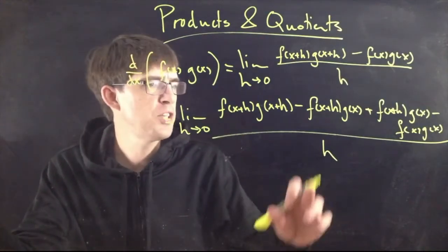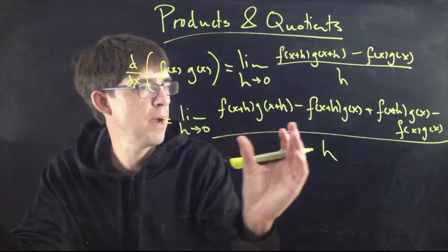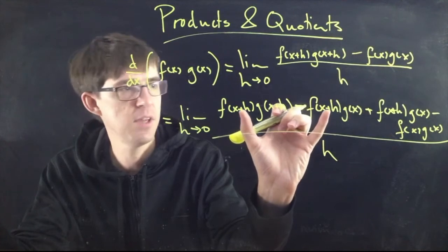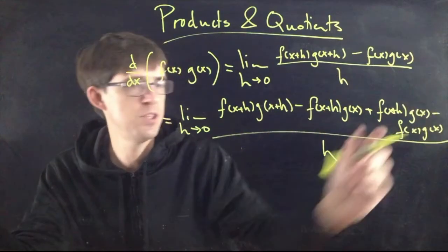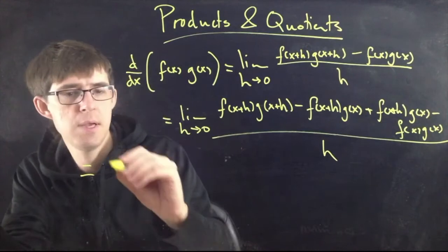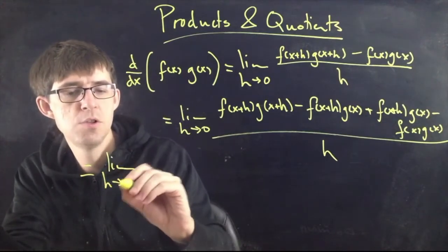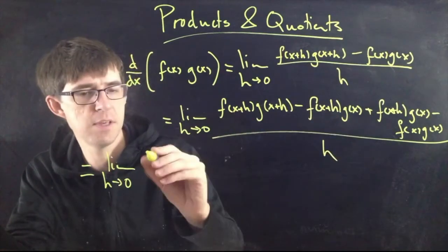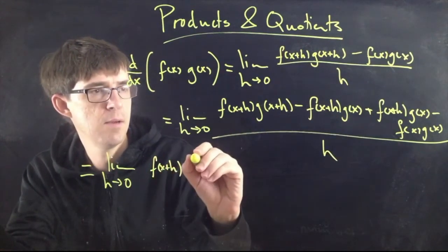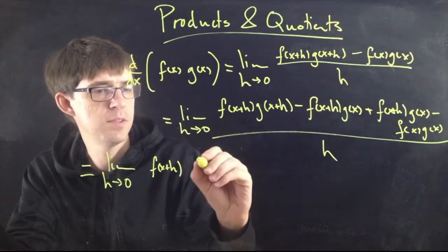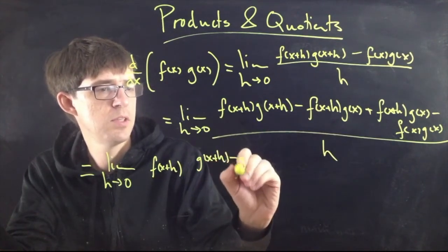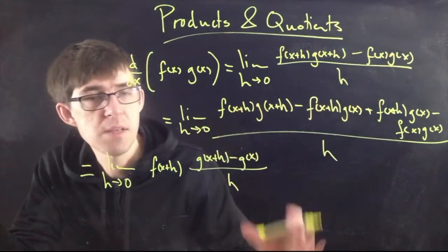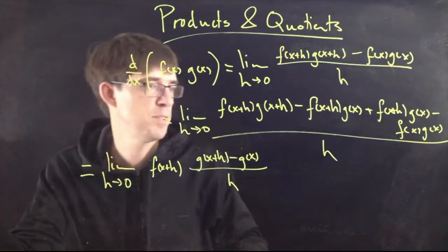Keep the first term as is, then subtract f(x+h)·g(x), and also add f(x+h)·g(x) — adding and subtracting the same thing. And then on the end we have minus f(x)·g(x), with the whole thing over h. Now we can separate this into two fractions. The first fraction contains the first two terms, factoring out f(x+h), giving f(x+h) times [g(x+h) − g(x)] over h.